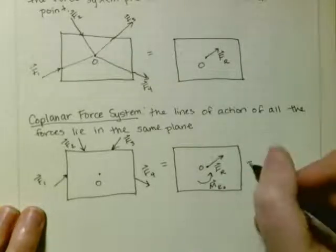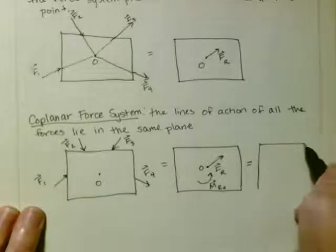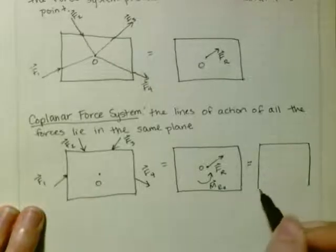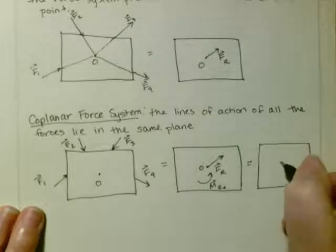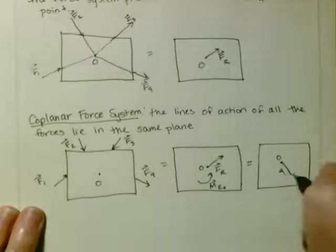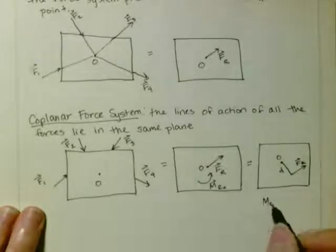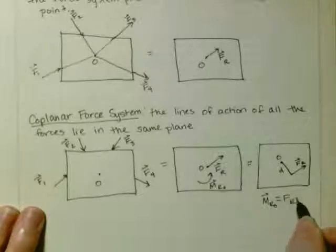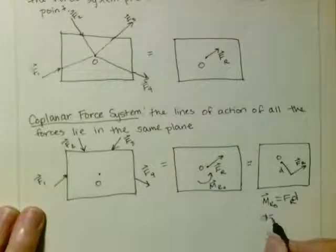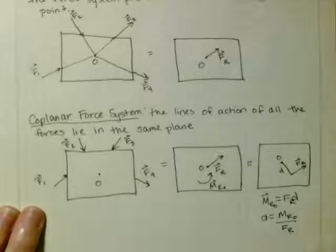And then if you wanted to further simplify it, you could apply the force at some perpendicular distance D, such that the MRO is equal to the resultant force times D. And you can find D by just MRO divided by the resultant force.